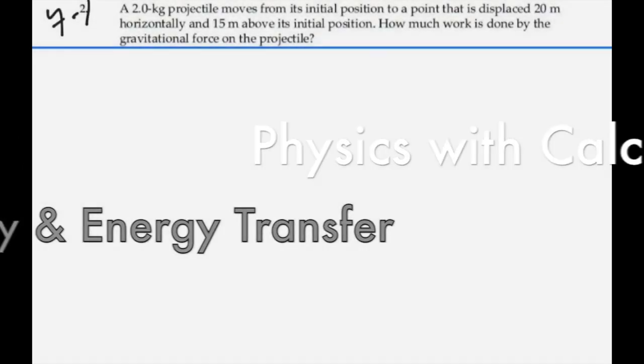Here's problem 7.2. A 2-kilogram projectile moves from its initial position to a point that is displaced 20 meters horizontally and 15 meters above its initial position. How much work is done by the gravitational force on the projectile?